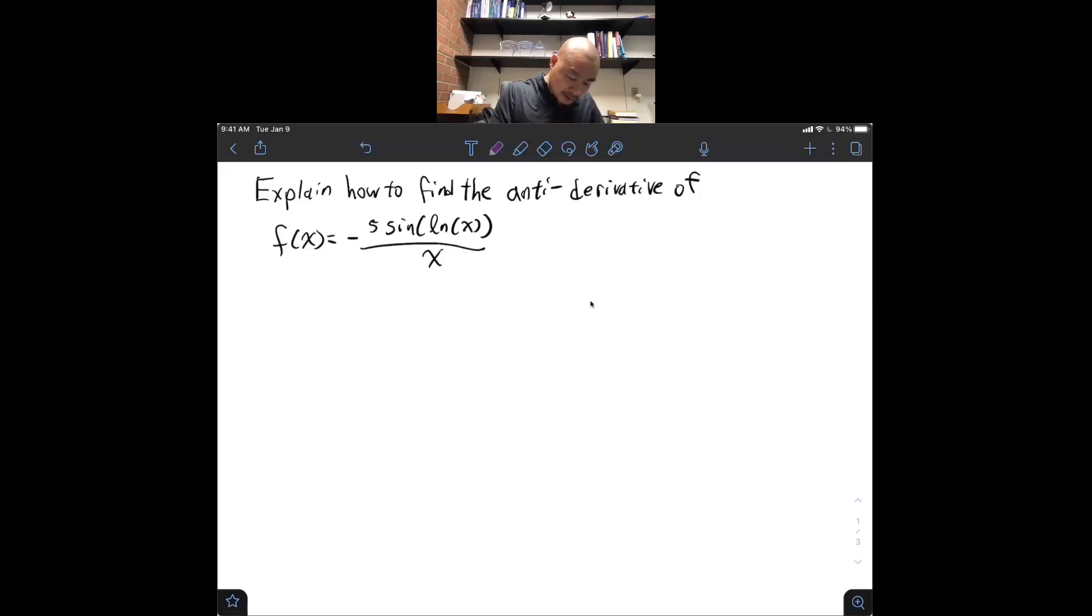The first thing we want to note is that we find the anti-derivative of a function by taking the indefinite integral, which I'm going to rewrite a little bit in order to better see the respective pieces of it. I'm going to pull out this minus 5 and we're left with this expression here.